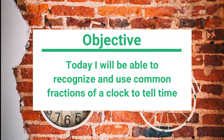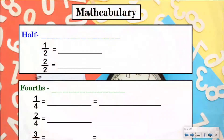Your objective today: I will be able to recognize and use common fractions on a clock to tell time. Here's our math vocabulary. Typically if you've been doing lessons with Instructor Beats, you know we do our math vocabulary first, write down the terms we'll be using, and then we use them as we do our math. Today's a little bit different because today really is about learning math vocabulary.